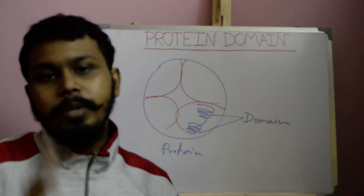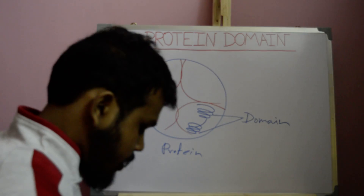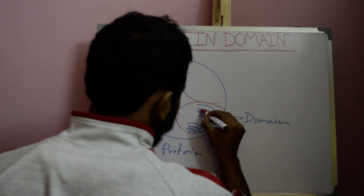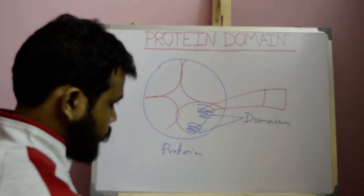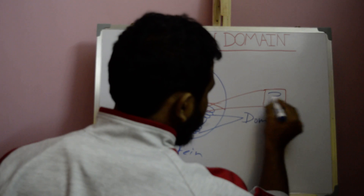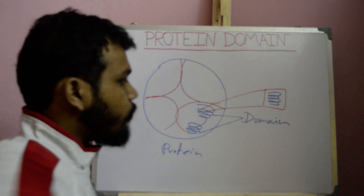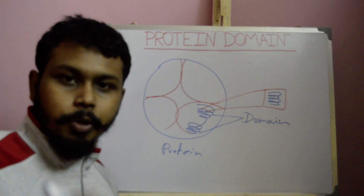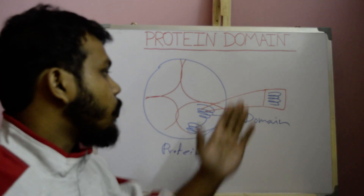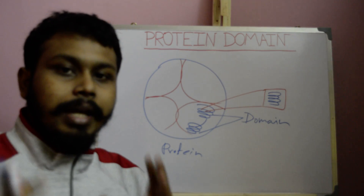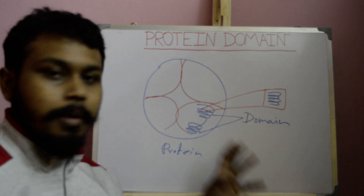A protein motif can be present in between protein domains. This secondary structure shown here is called a protein motif. The main difference between a protein motif and a protein domain is that a protein motif cannot retain its stable structure outside of the protein.